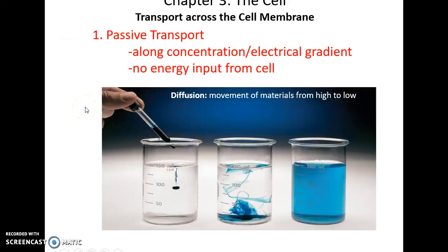Some materials can cross the cell membrane. Many of these move by passive transport. Passive transport means they are moving either along the concentration gradient — going from high concentration to low — or along the electrical gradient, where a negatively charged molecule will move to a positive area, or a positively charged molecule will move to a negatively charged area. This requires no energy.